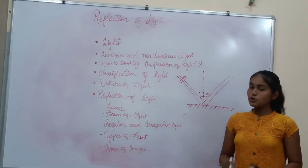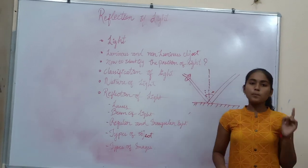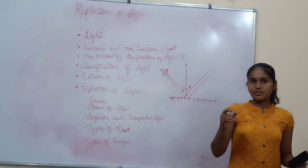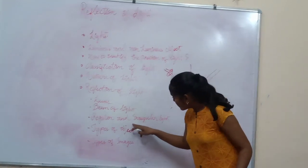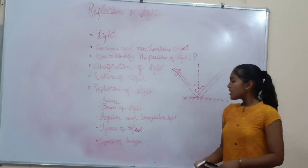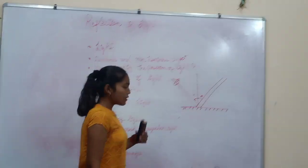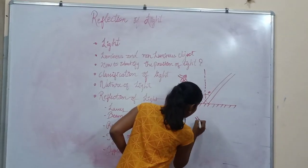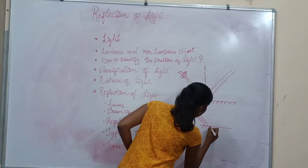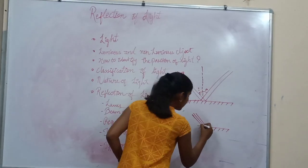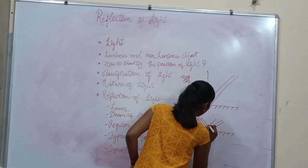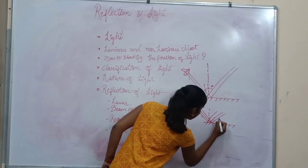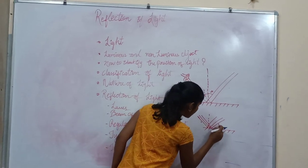Now we should know what is actually a beam of light. A beam of light is actually the combination of lights — you should remember this. If you go further, then regular and irregular reflections. Regular lights are those which are going to pass through the beam of a light. When the source is going to pass through a reflected surface, if we assume this is one incident ray and this one is reflected.